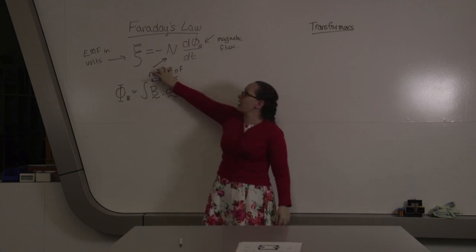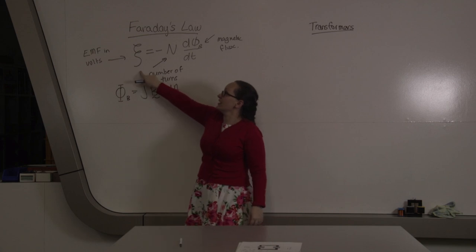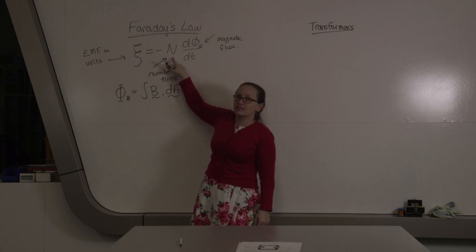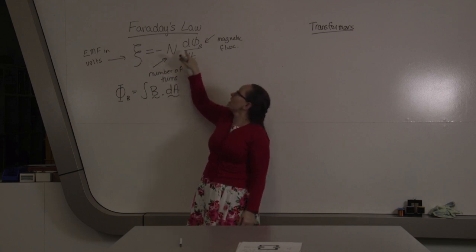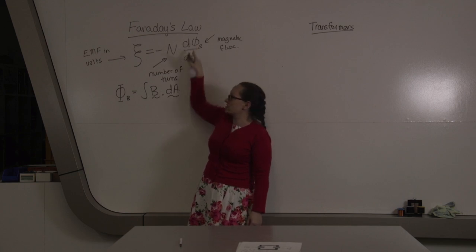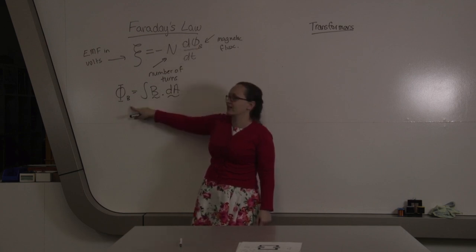Faraday's law is given by the equation that the EMF, which is measured in volts, is equal to minus n, where n is the number of turns in a coil, times dφ_b/dt, where φ_b is the magnetic flux. The magnetic flux can be calculated as the integral of B dA.